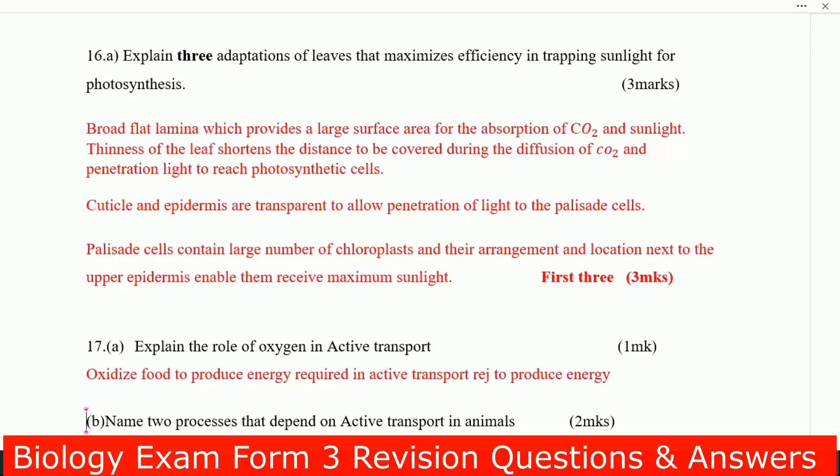How the leaves are adapted for photosynthesis. Number one, broad flat lamina which provide a large surface area for absorption of carbon dioxide and sunlight. Thinness of the leaf shortens the distance to be covered during the diffusion of carbon dioxide and penetration of light to reach photosynthetic cells.